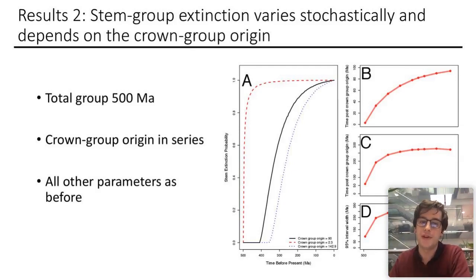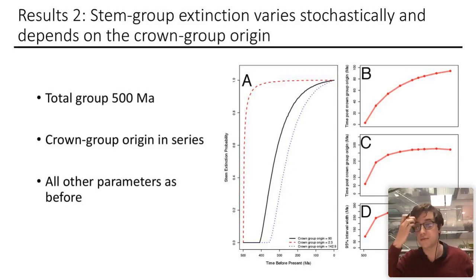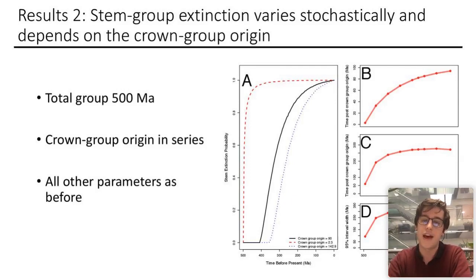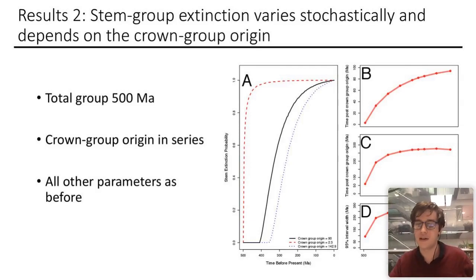Figure A shows the cumulative probability that the stem group has gone extinct at time points between 500 and 0. Figures B and C show the point at which 50% and 95% of stem groups have gone extinct across all simulations. Focusing on the black line at 410 million years — the crown group age derived by Bud and Mann — we can see that 95% of stem groups have gone extinct by about 250 million years after the origin of the crown group, which is quite a long time for a 500 million year birth-death process.